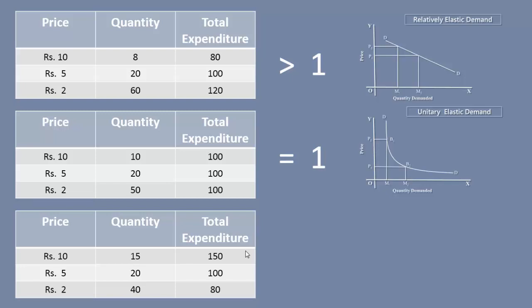When the price goes up to Rs. 10 from Rs. 5, the consumer spends Rs. 150, which is greater than the initial expenditure of Rs. 100. In this case, the price and the total expenditure are moving in the same direction.